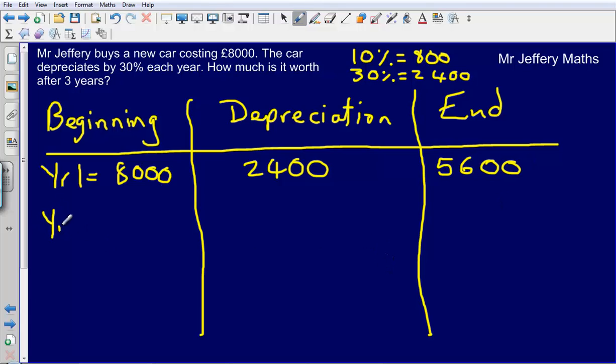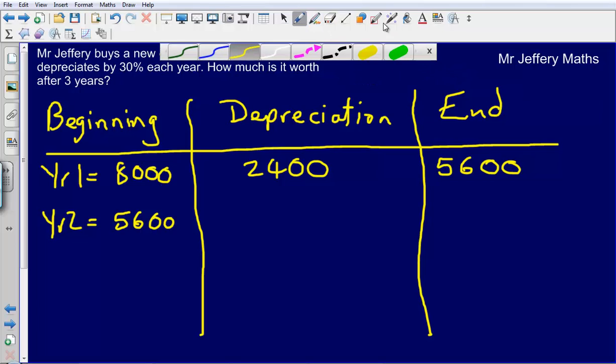So that means at the beginning of year 2, my car will be worth £5,600. And again, I now need to work out what it has depreciated by. So it's depreciated by 30%. So let's quickly work out what 30% of £5,600 is.